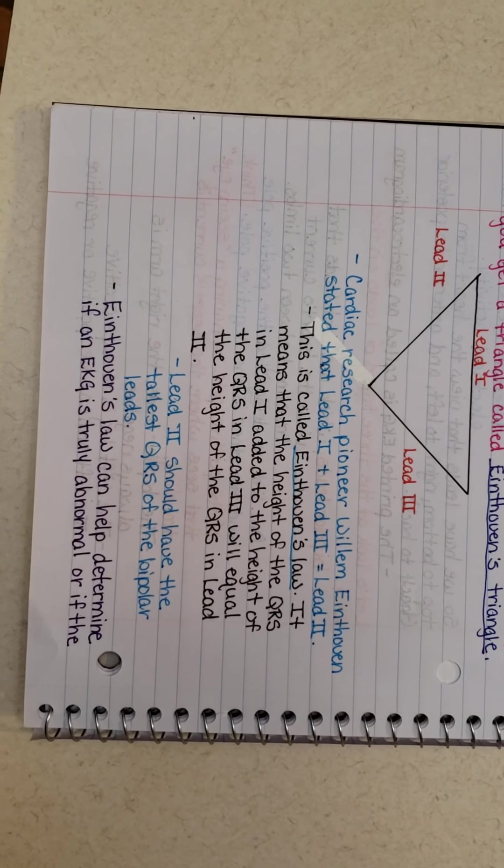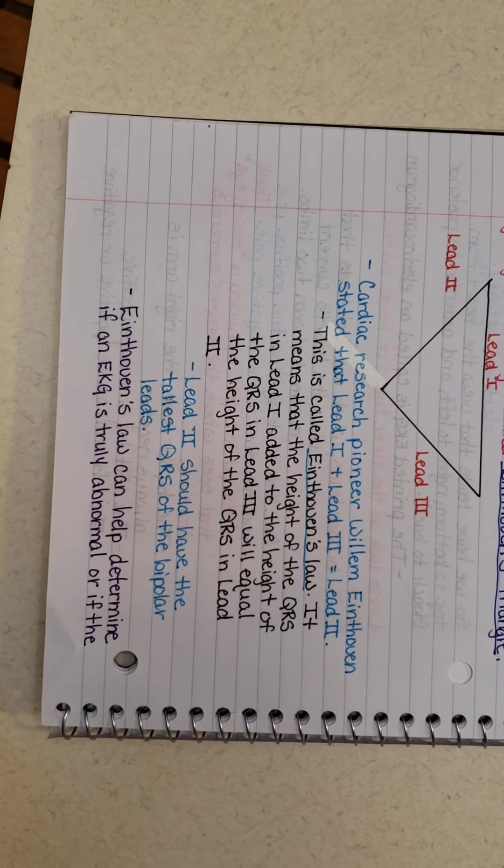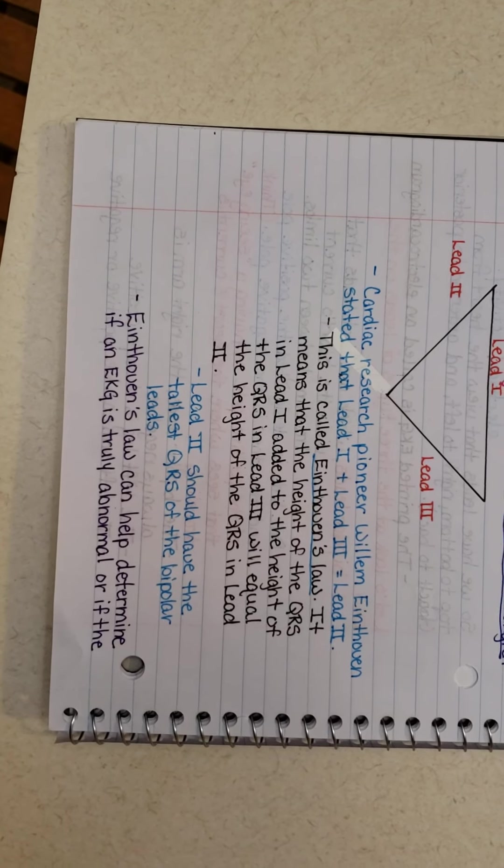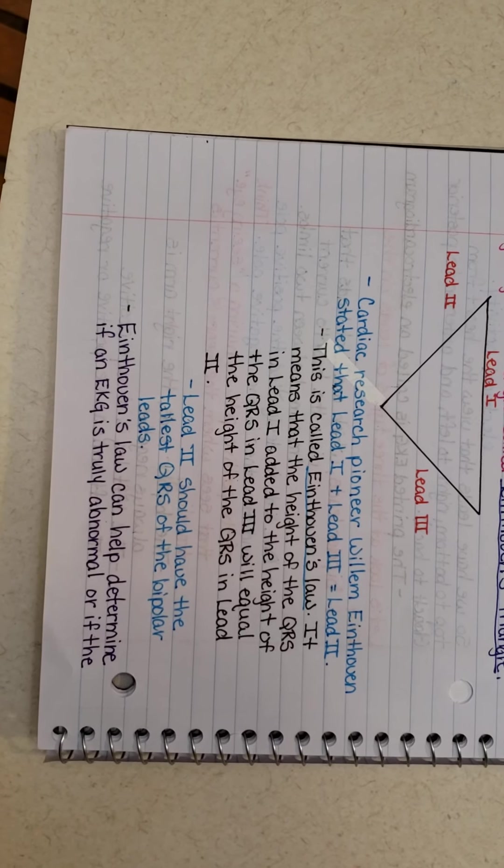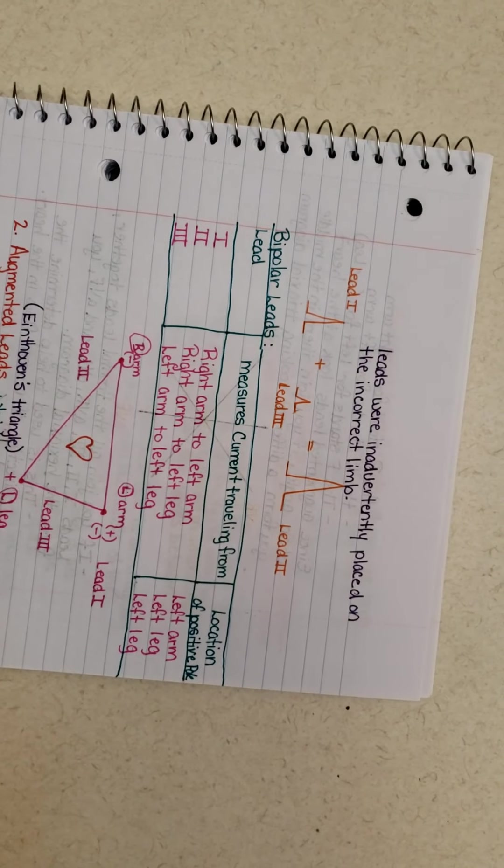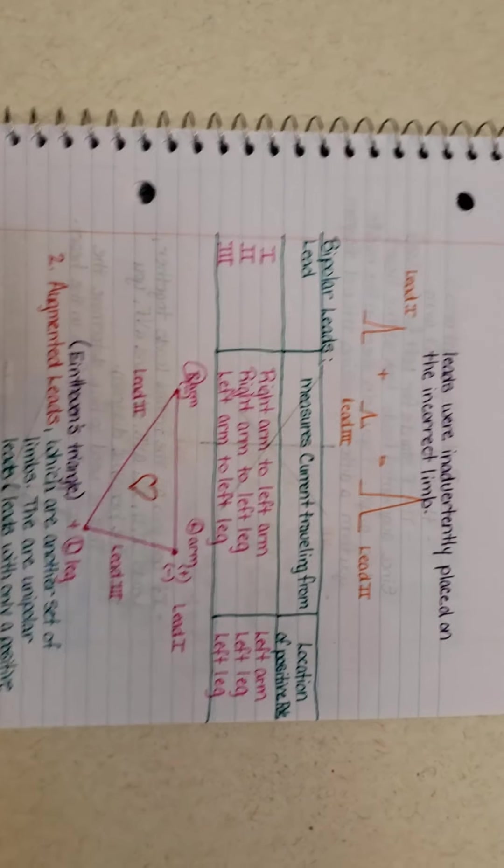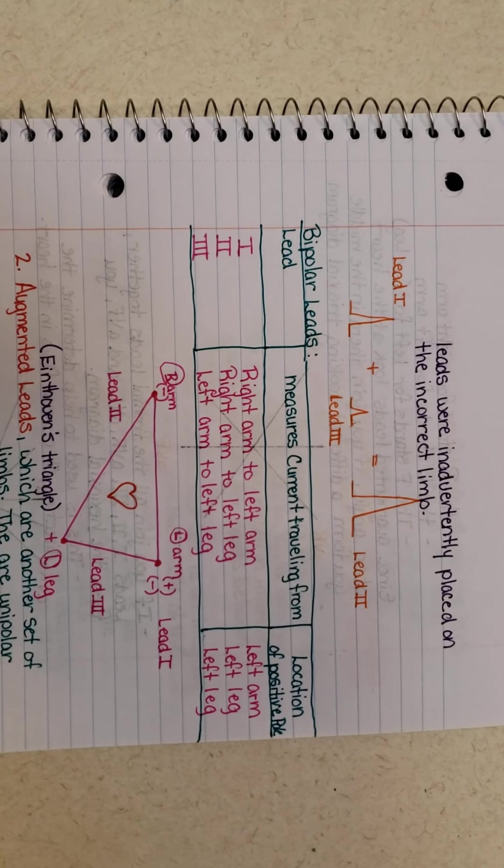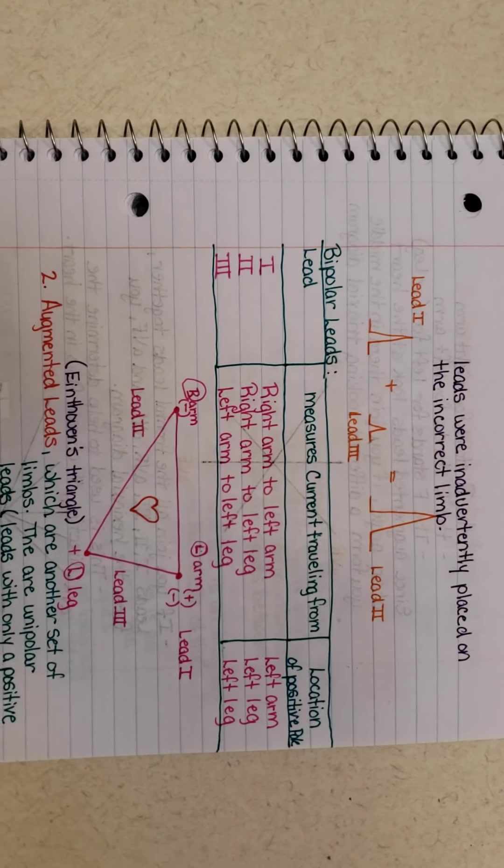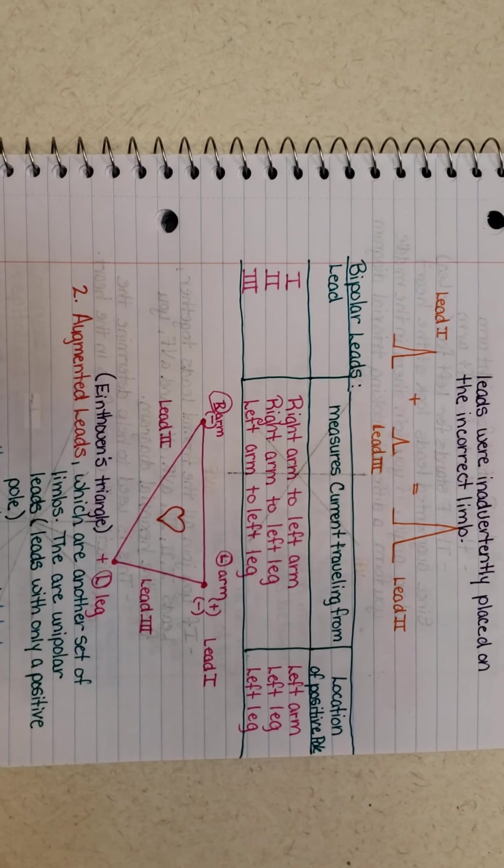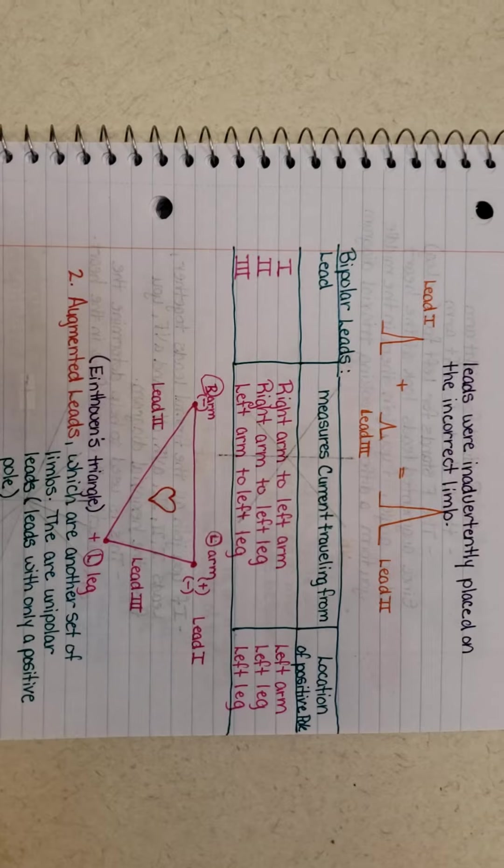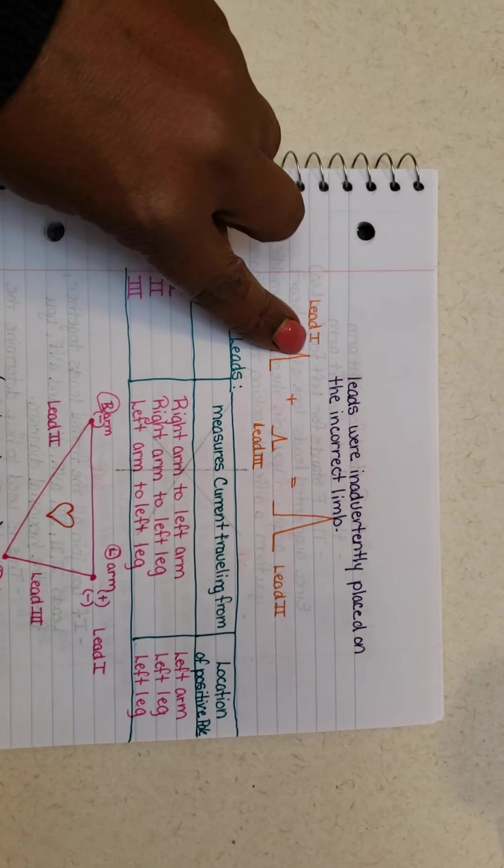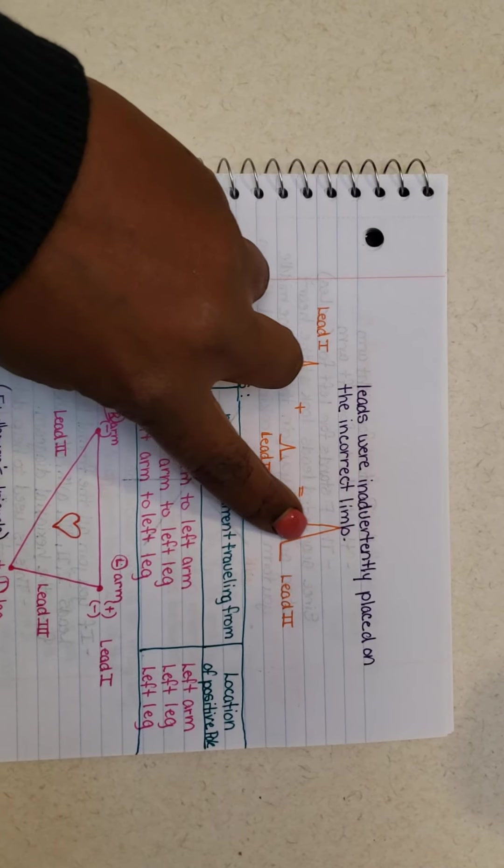Cardiac research pioneer William Einthoven stated that lead one plus lead three will equal lead two. It basically means that the height of the QRS in one plus the height of the QRS in three will equal the height it is in lead two. And when I say amplitude, it means the height length of your R-wave.